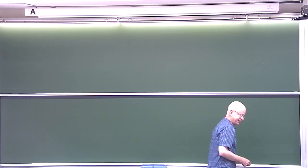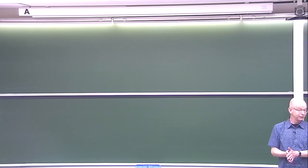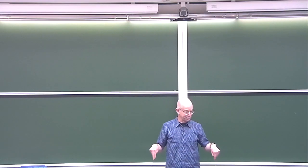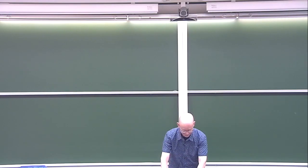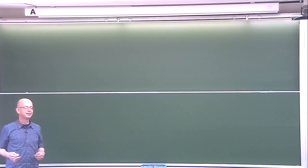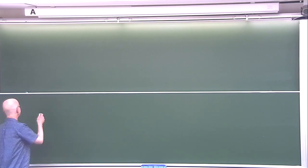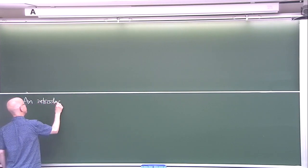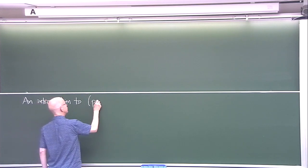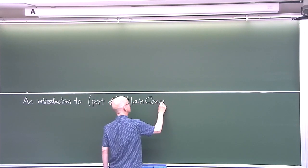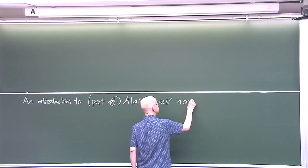Thank you very much. Thank you to Professor Kato for the invitation to come here. It's always a great delight to be in Kyoto, especially in this room. I like to be in this room. I want to make an introduction to a piece of the work of Alain Connes on what's called non-commutative geometry.